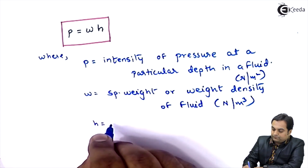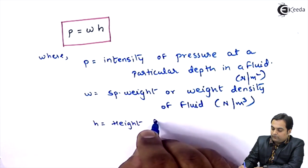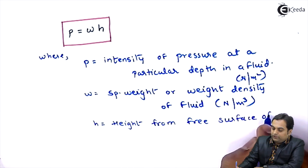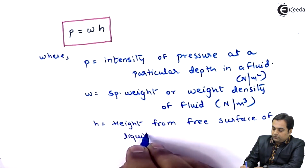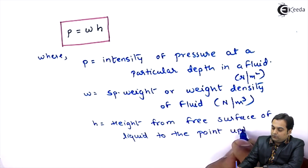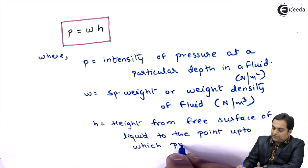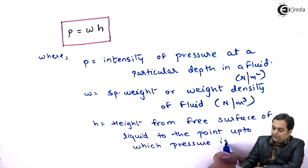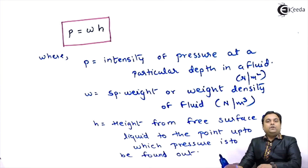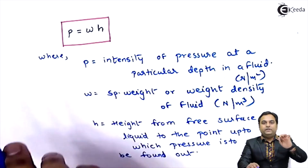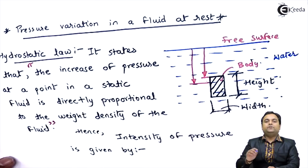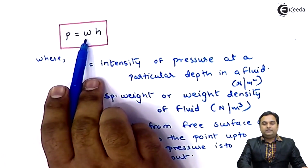H is the height from the free surface of the liquid to the point up to which pressure is to be found out. So, if we want to find out pressure at any given height for this body, that pressure can be found out using the formula P = wh.